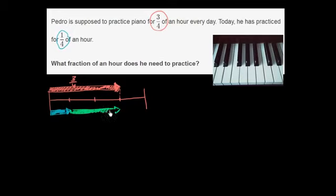So let me write it like this. So this is how much he needs to go. How much does he need to practice? So he needs to do a total of 3 fourths. So if you subtract 1 fourths from the 3 fourths, you're going to get this amount right over here. You're going to get the amount that he needs to practice.